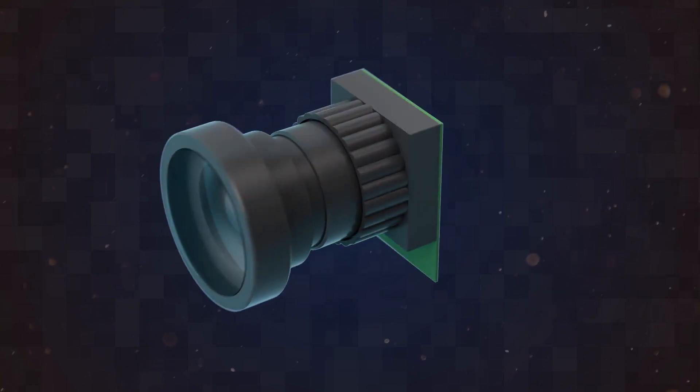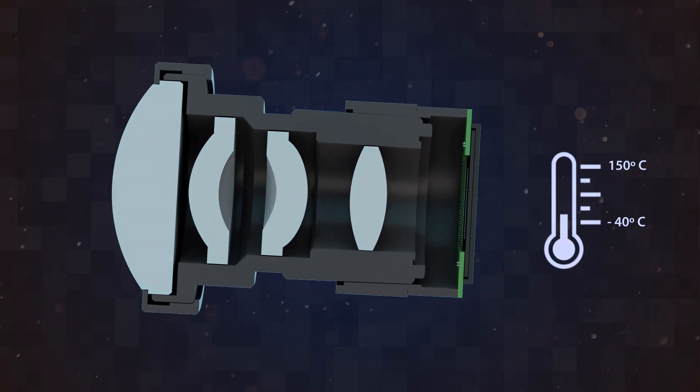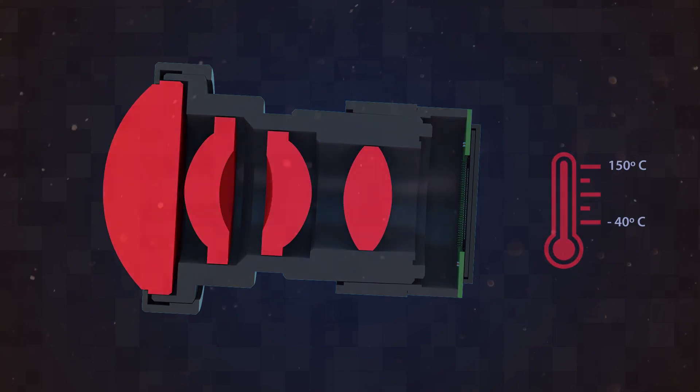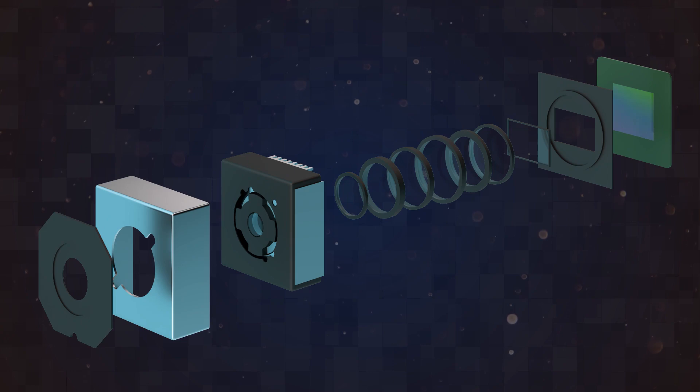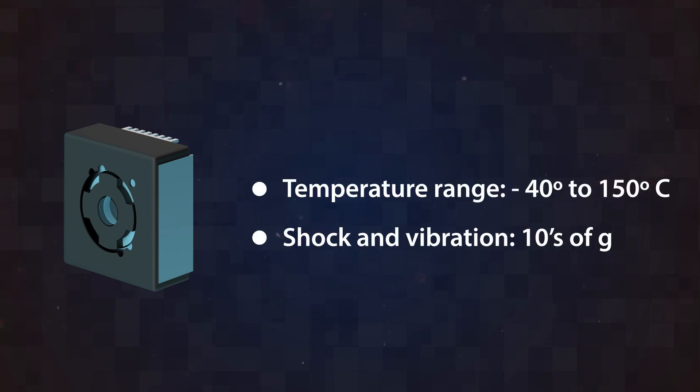Embedded vision cameras often face challenges in maintaining image quality and focus stability during temperature fluctuations as the optics undergo thermal expansion. While smartphones use electromagnetic autofocus actuators, they are not reliable for embedded vision cameras due to extreme environmental conditions and larger optics.